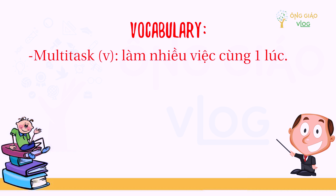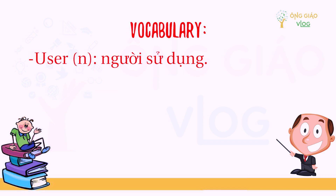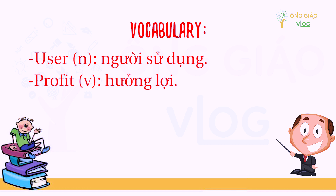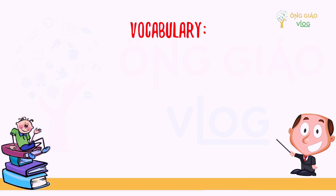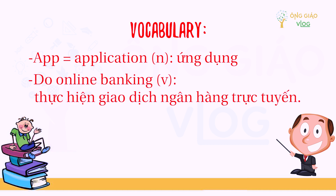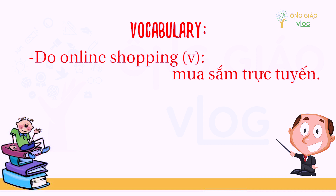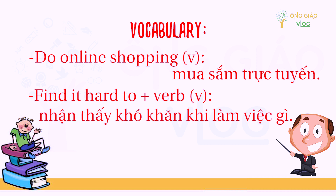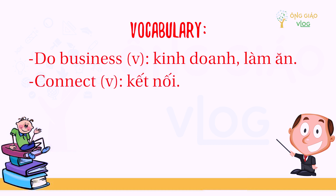Vocabulary continued: 'multitask' — làm nhiều việc cùng một lúc; 'convenience' — sự tiện lợi; 'device' — thiết bị; 'user' — người sử dụng; 'profit' — hưởng lợi; 'feature' — đặc tính, tính năng; 'app' (application) — ứng dụng; 'do online banking' — thực hiện giao dịch ngân hàng trực tuyến; 'do online shopping' — mua sắm trực tuyến; 'find it hard to + verb' — nhận thấy khó khăn khi làm việc gì; 'do business' — kinh doanh, làm ăn; 'connect' — kết nối.